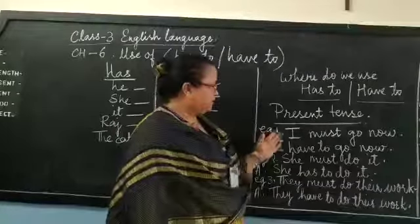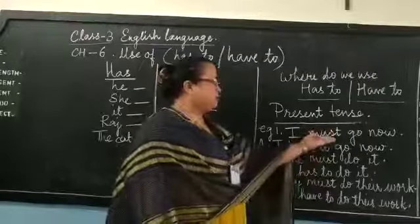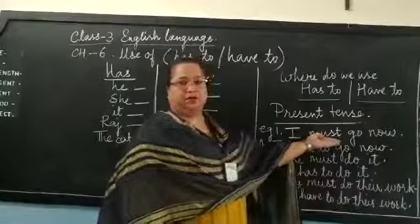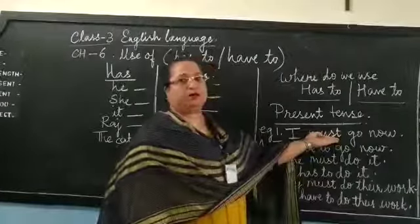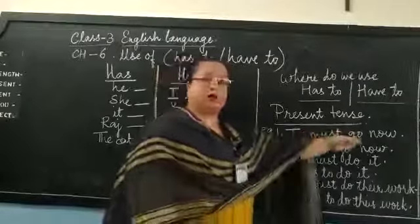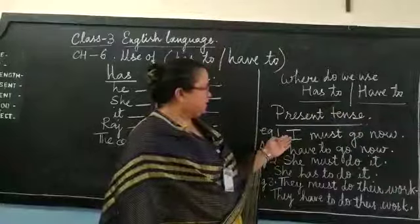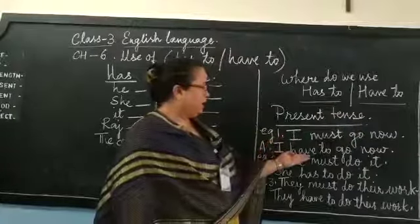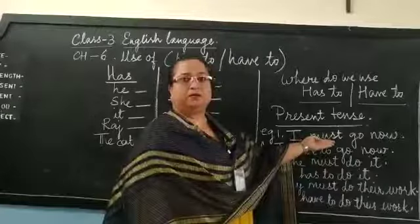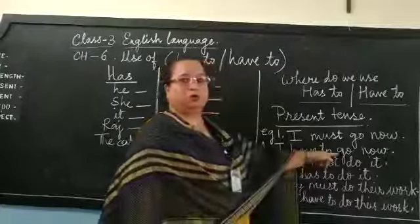The first example is: I must go now. If you look at the sentence, I have a word that is must. Now, what does must mean? Must means that something has to be done — it is necessary to do the work given to us. Must is for the present tense. Since the sentence begins with I, I need to use have to. So I write have to instead of the word must. My new answer is: I have to go now.